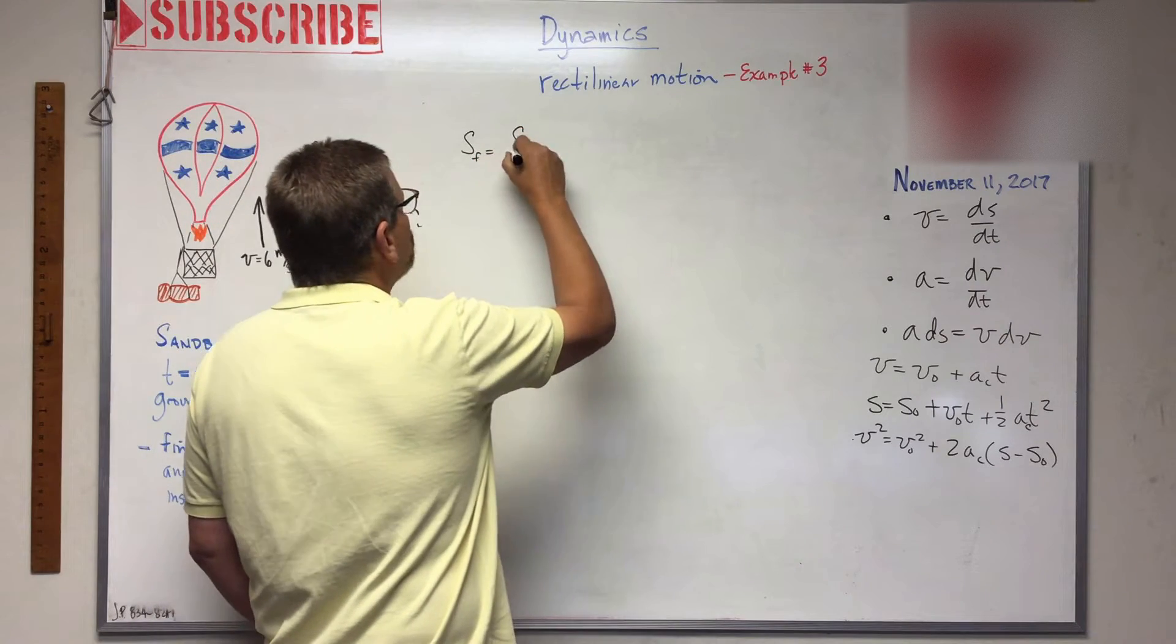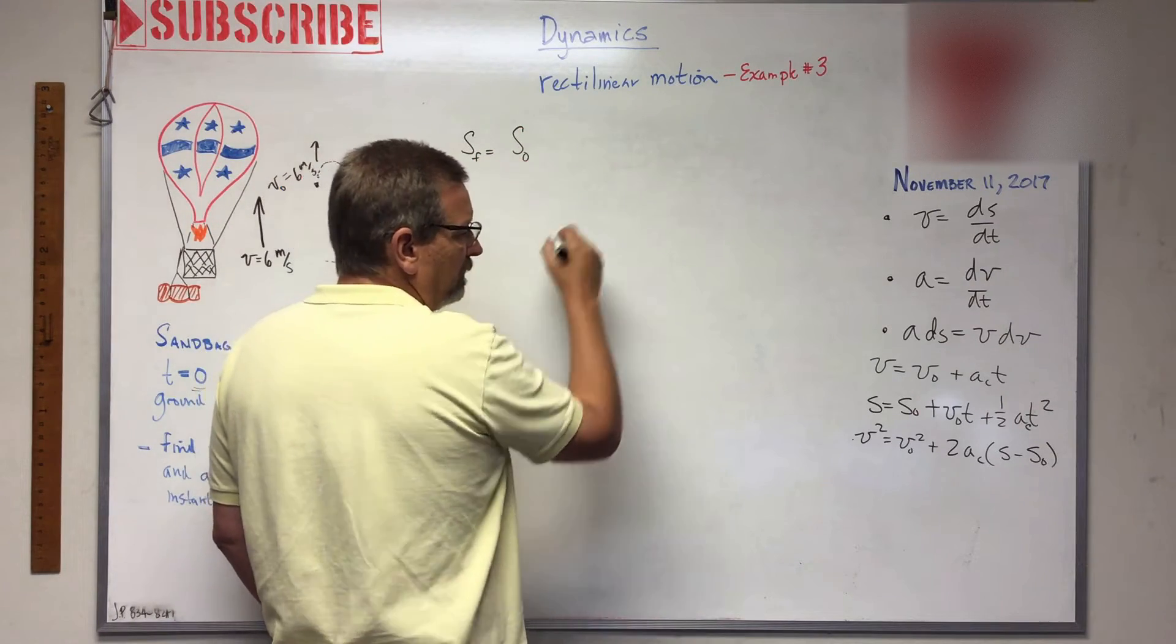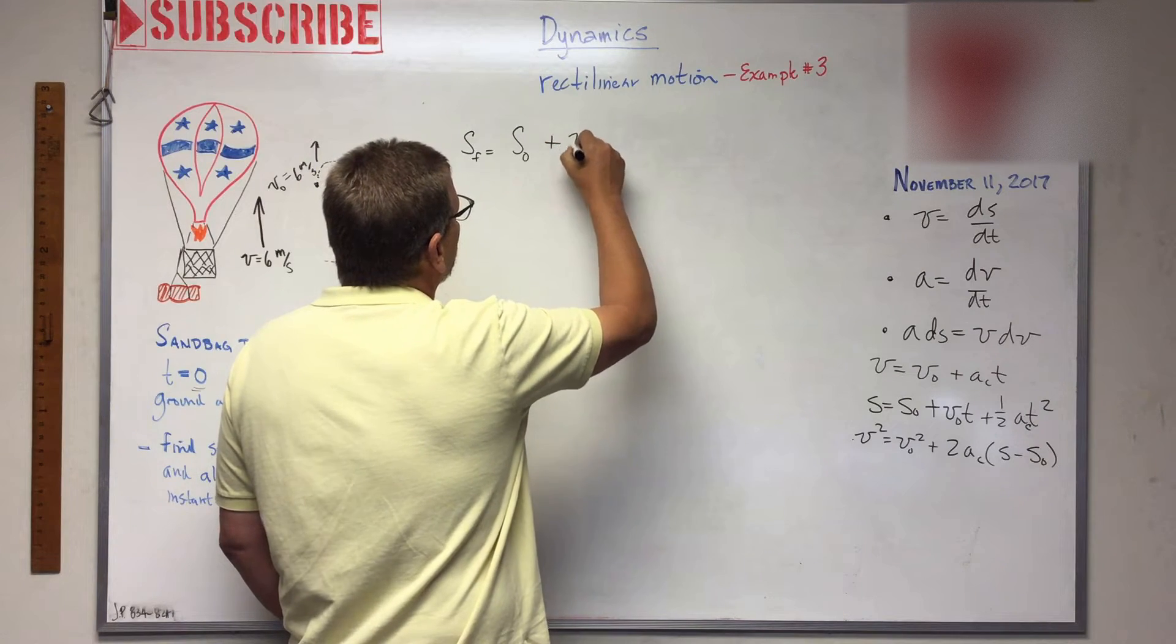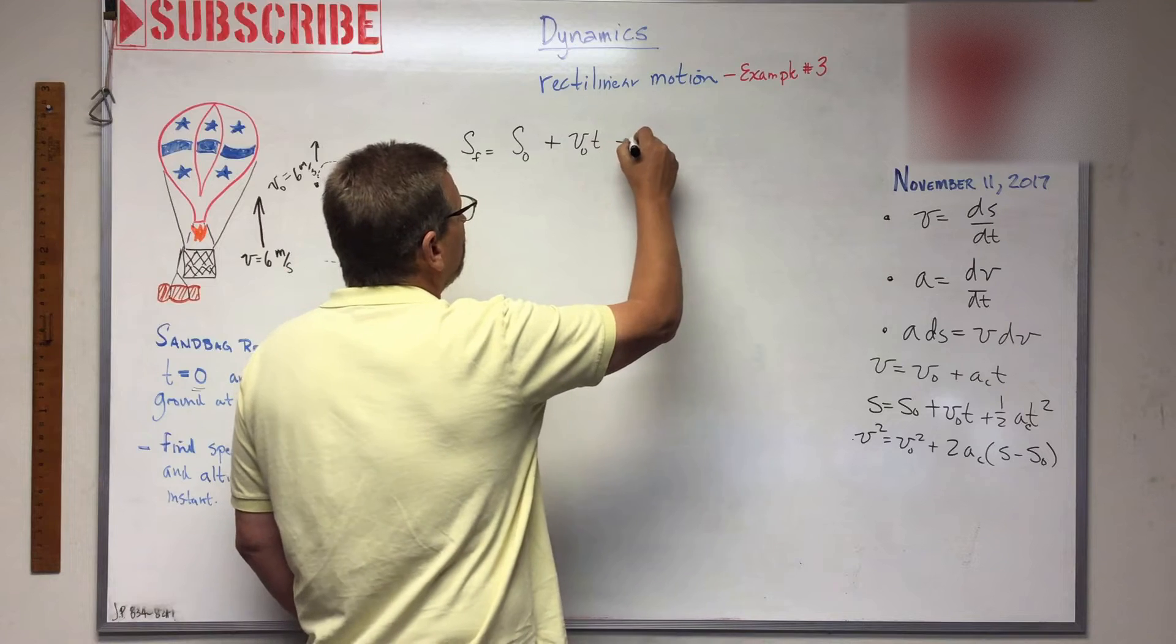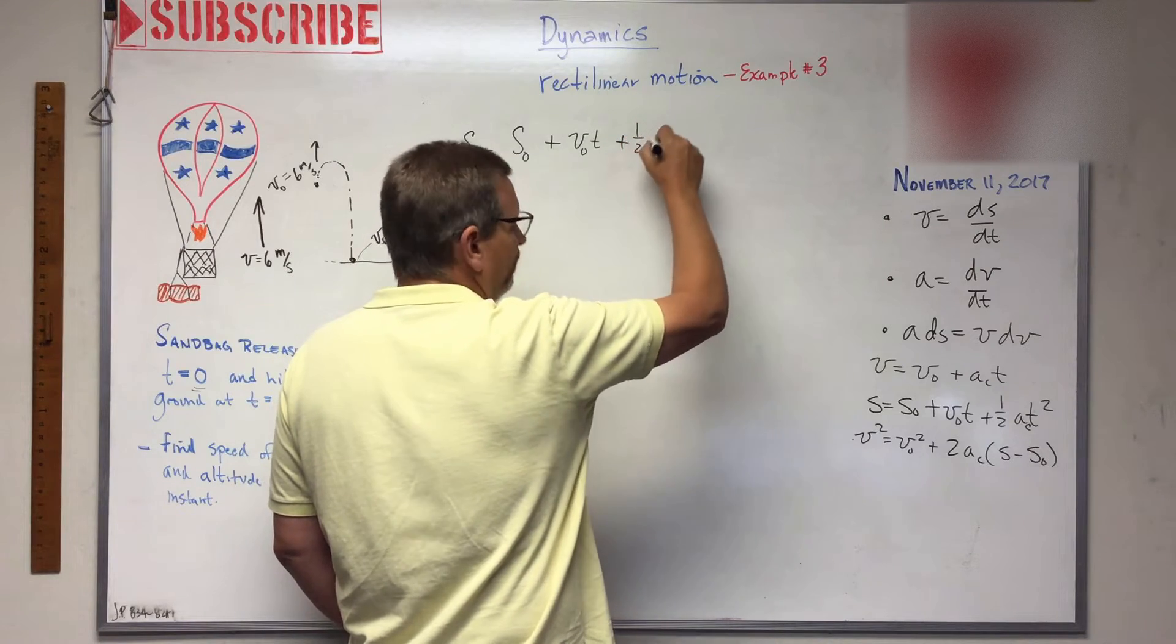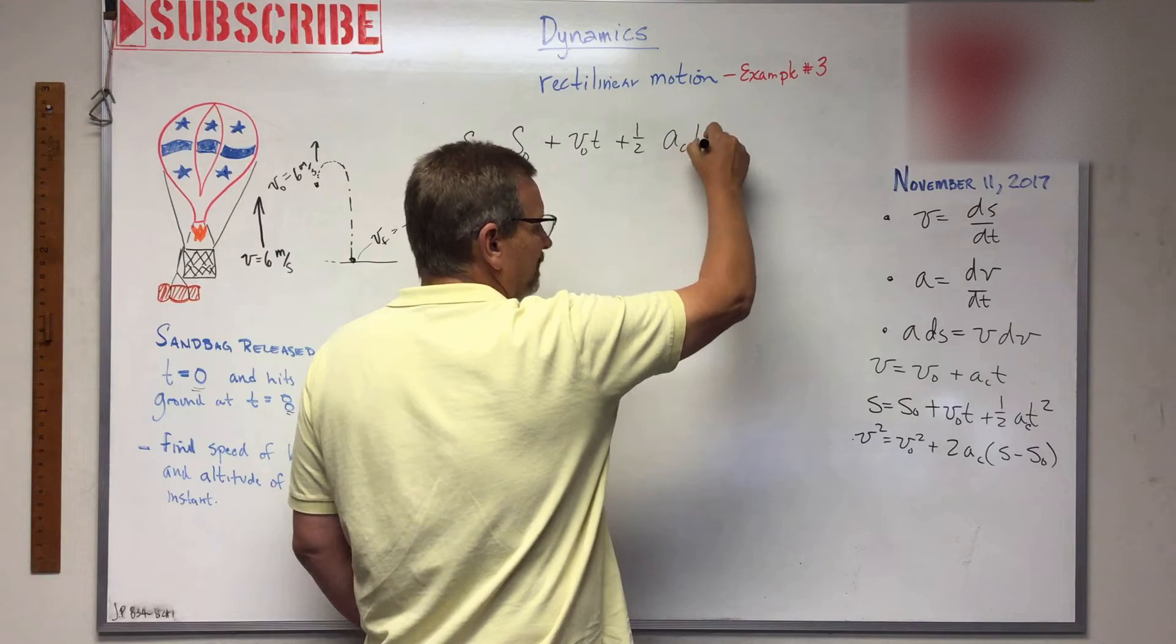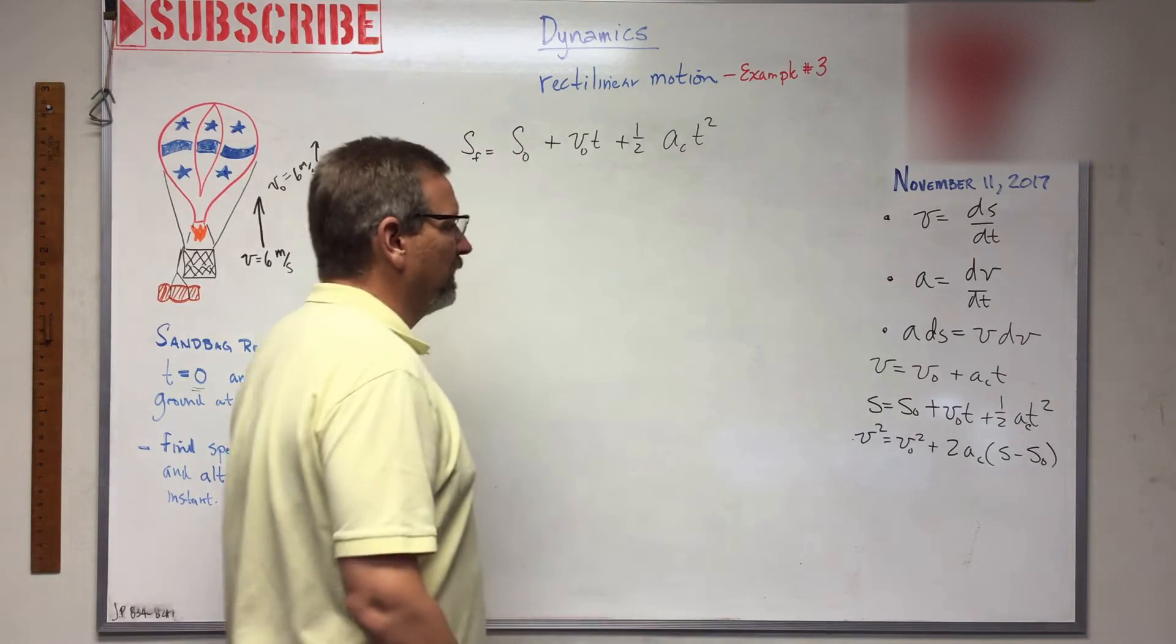So position final is equal to initial position plus velocity times t plus one half a_c t squared. Here we go.